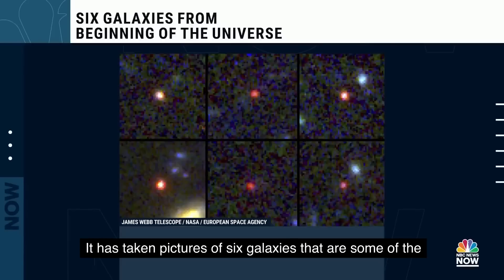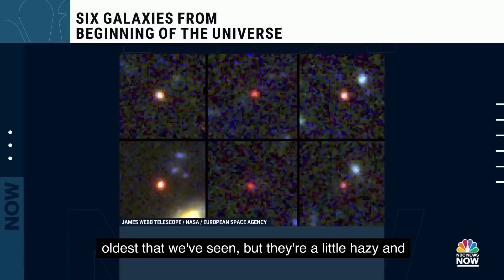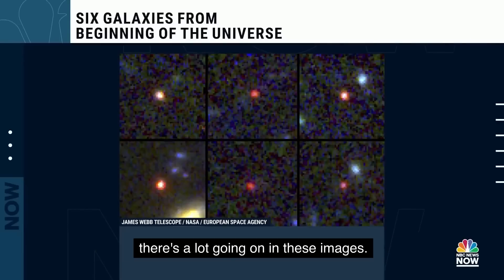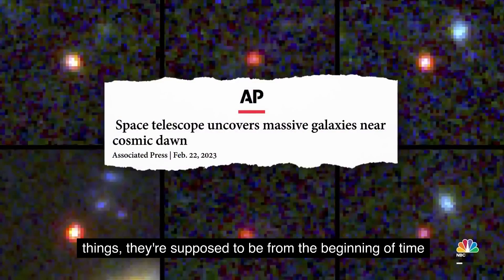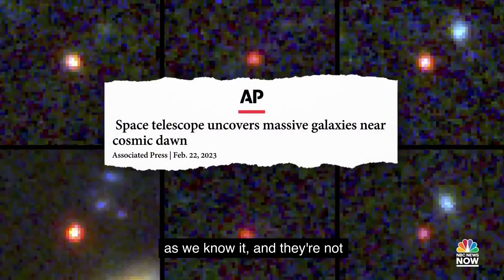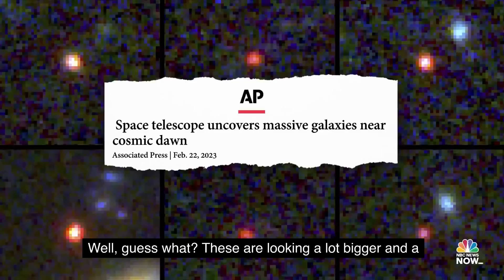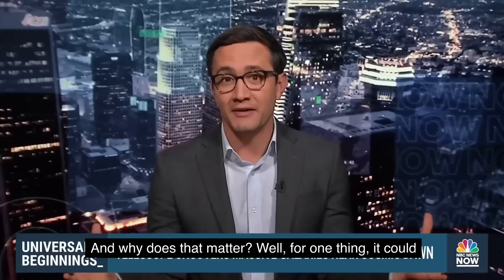It has taken pictures of six galaxies that are some of the oldest that we've seen, but they're a little hazy and there's a lot going on in these images. Bear with us. For one, when you're looking at these things, they're supposed to be from the beginning of time as we know it, and they're not supposed to be all that well-formed. Well, guess what? These are looking a lot bigger and a lot more developed than we thought. And why does that matter?